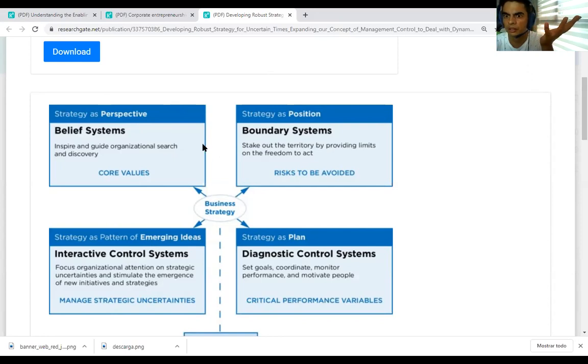So according to Simons, management control can be framed in these four levers of control. They're like systems of control. He also calls to those things. So he says that there are four systems of controlling an organization. So the first one is the belief systems, which is mainly like values. What do we care about?